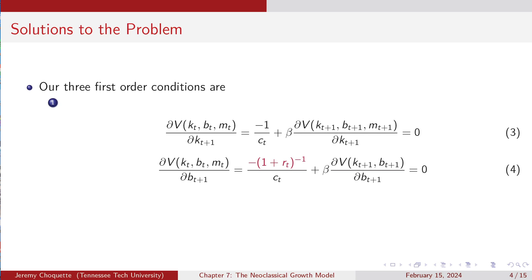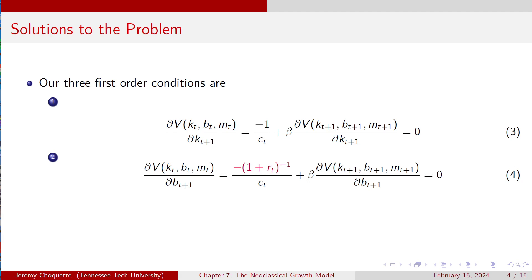For B_{t+1}, it's the same thing as what we had in the previous setup, just with the augmentation of M_{t+1} in the arguments of V. I paused the video and went back and fixed some things because I caught a mistake — when you catch mistakes, you fix them and own up to them. So equation 4 is the same as the first-order condition for bonds in the previous example; the only difference is M_t and M_{t+1} augmenting the arguments of V.